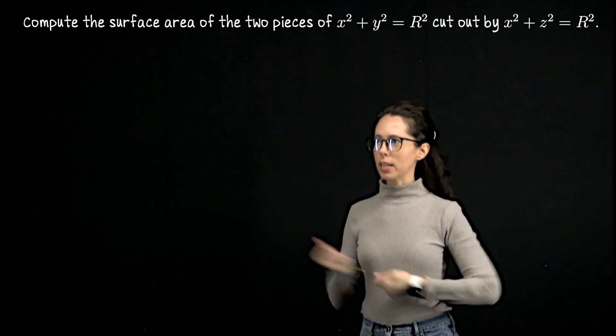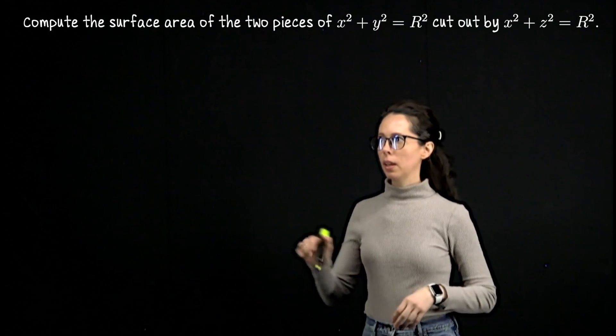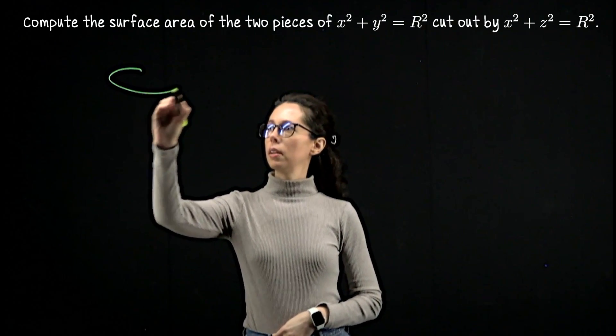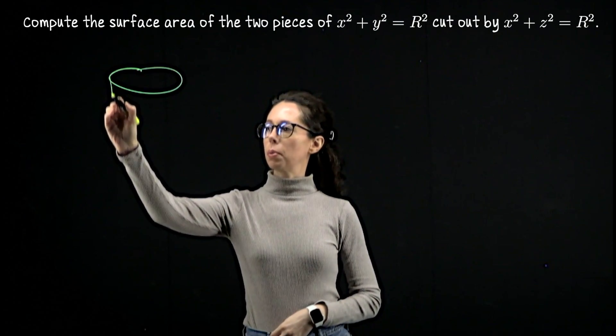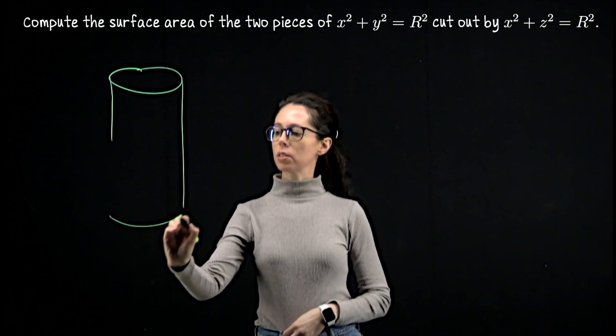So I said all that in words, but let me try to sketch a picture of what's going on. We have the cylinder x squared plus y squared equals capital R squared.